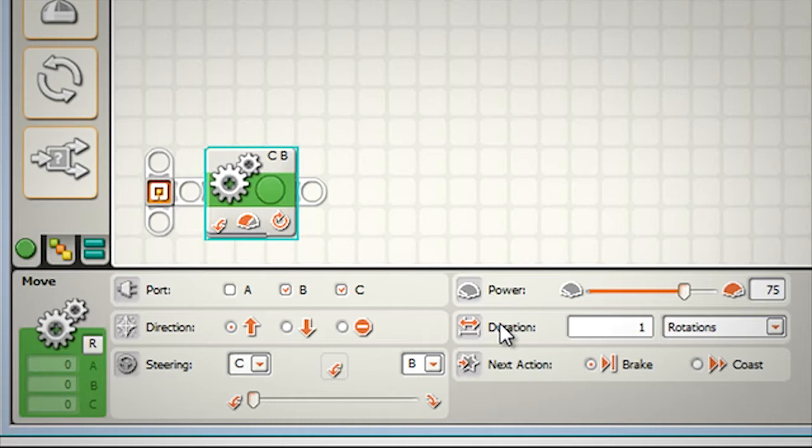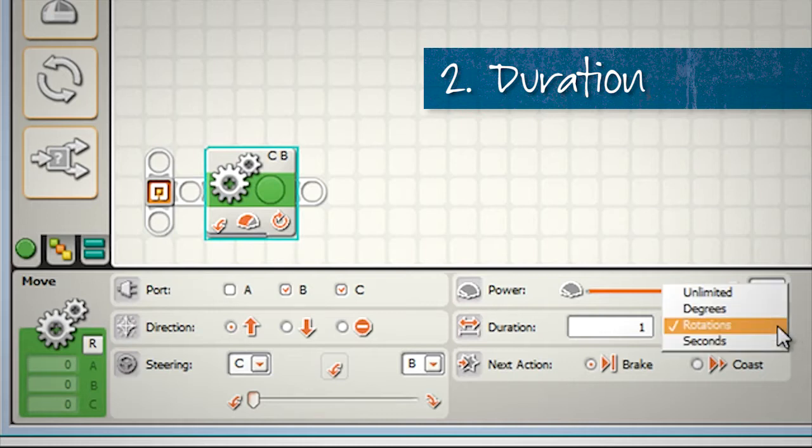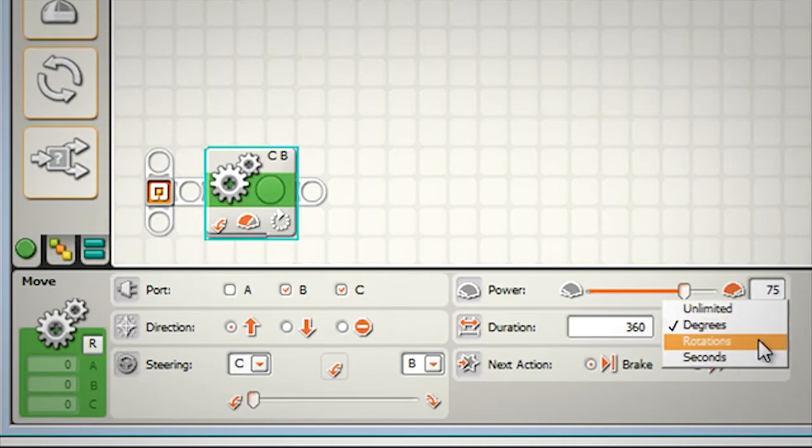The next thing that will determine how far the robot turns around is the duration. I'm looking to have my robot turn around one complete rotation, so I'm just going to leave this setup as is: one rotation. If you want, we could do this in degrees. 360 degrees is the same as one rotation. Let's download this to our robot and see how it goes.